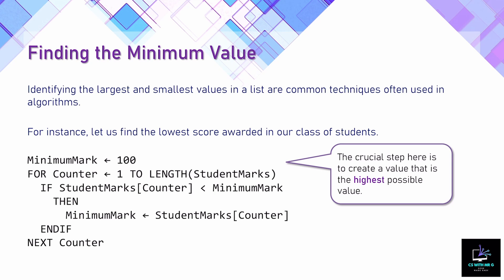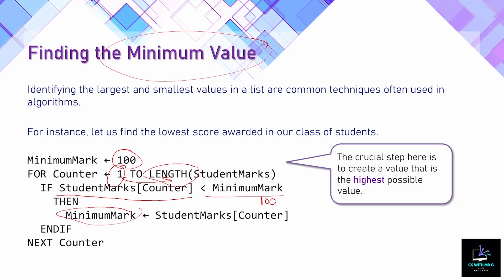The next technique is finding the minimum value inside an array. We use the same student marks array and the same for loop with the length function. What's important is that at the very beginning we create a variable set to the highest possible value in our list. Since our list is percentages, the biggest possible value is 100. So minimum mark is set to 100. Inside the loop, we check if the student mark is less than the minimum mark, and if so, we store it in the minimum mark variable, replacing 100 with the new lower value.